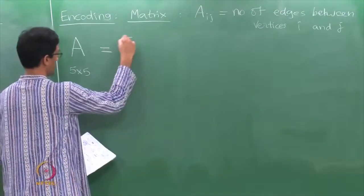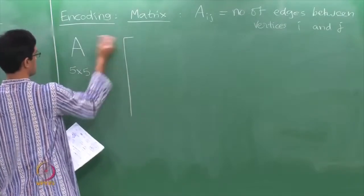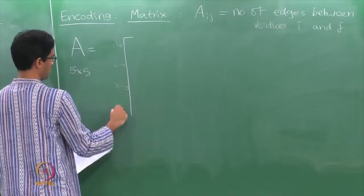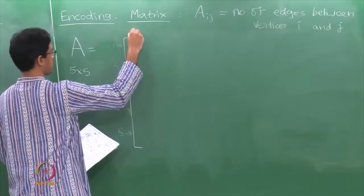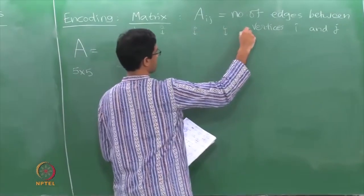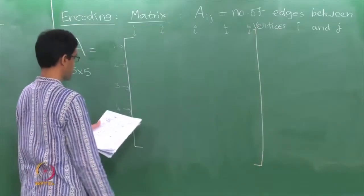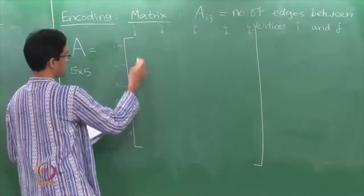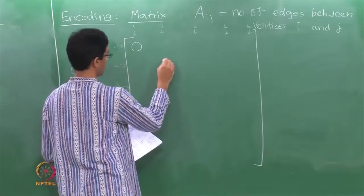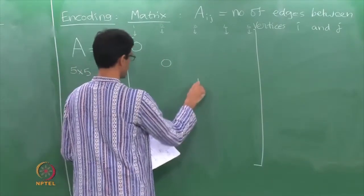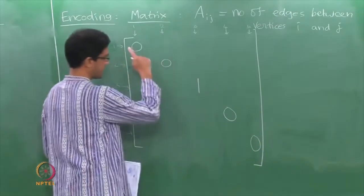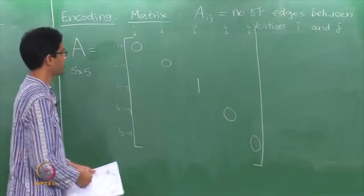In this example, the matrix A for this graph would be the following. I have rows and columns labeled 1 through 5. Between vertex 1 and vertex 1 there are no paths because there is no loop there. Between 2 and 2 there are no edges; between 3 and 3 there is a loop, which means there is one edge connecting 3 with 3; there are no edges connecting 4 with itself or 5 with itself. You only get entries along the diagonal when there are loops in the graph.